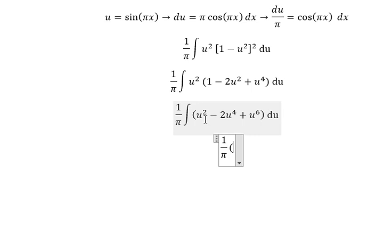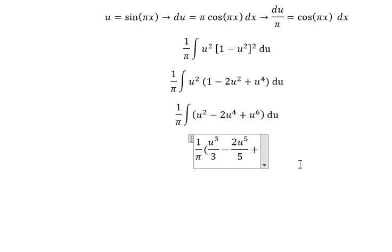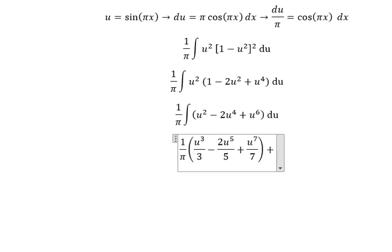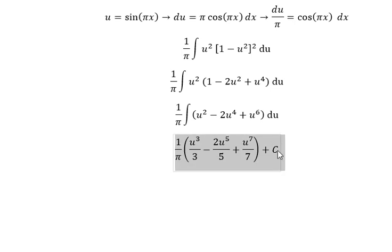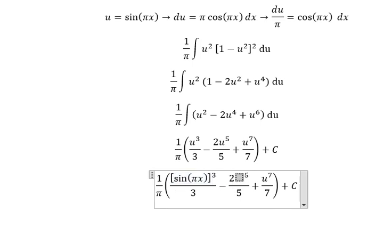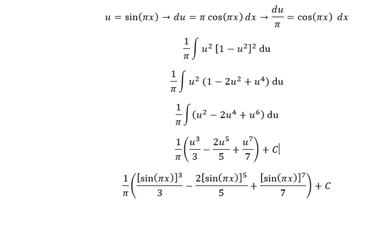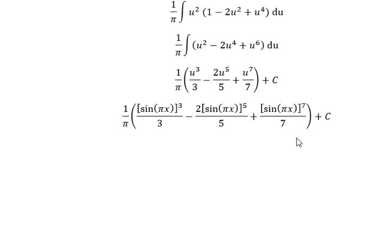The integration of u squared gives u to the power of three over three. This one gives u to the power of five over five. And the last one gives u to the power of seven over seven. And we put the constant C. Substituting back u equals sine bx, this is the final answer.